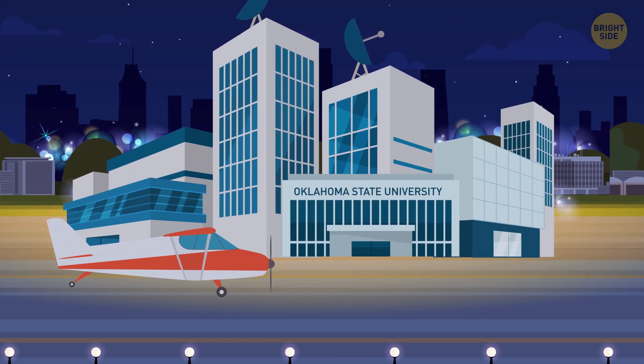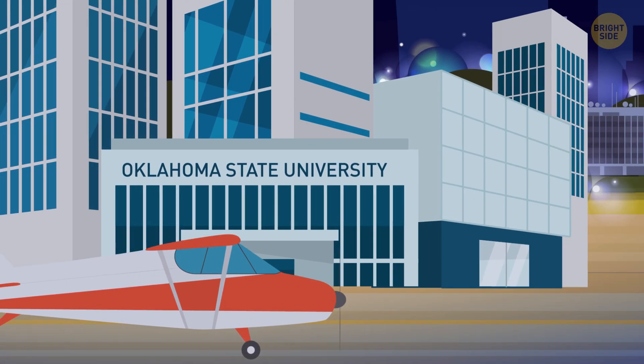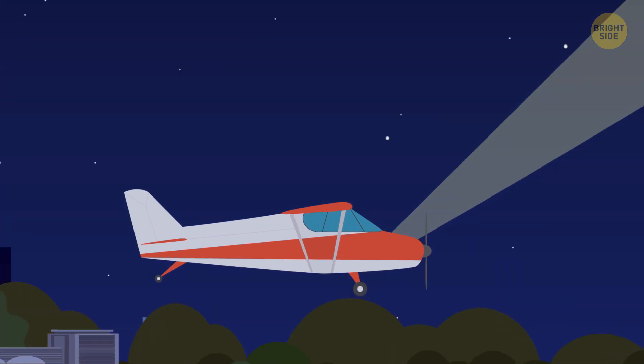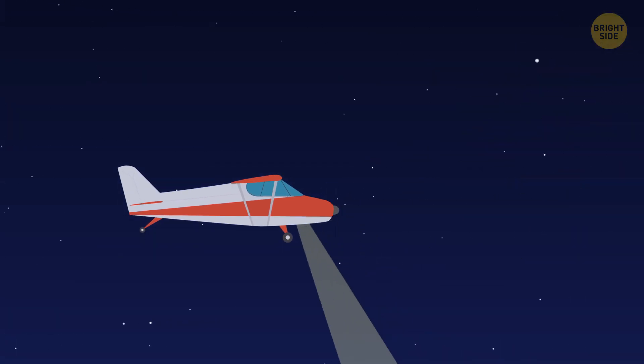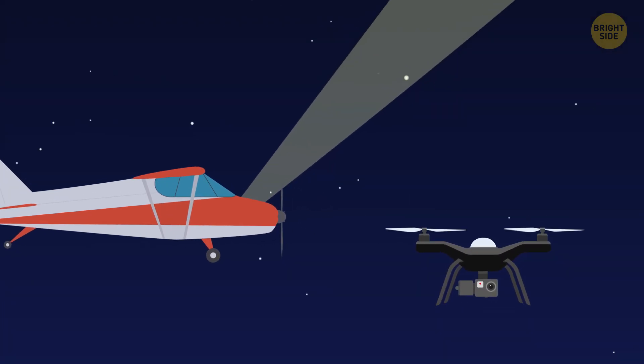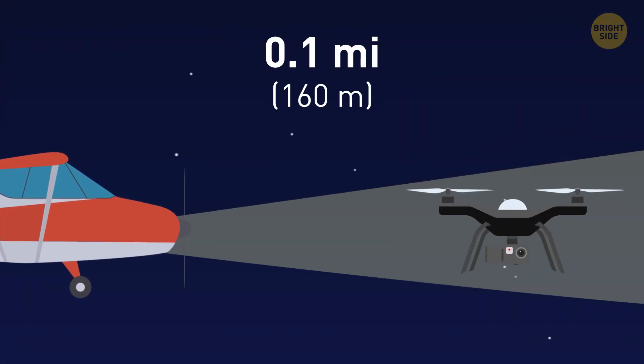Besides, quadcopters can be extremely difficult to spot in the sky. For example, researchers at Oklahoma State University studied how fast pilots of small planes could notice drones if they were searching for them on purpose. It turned out that the pilots saw quadcopters only when they were already one-tenth of a mile away from their planes.